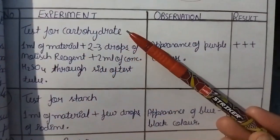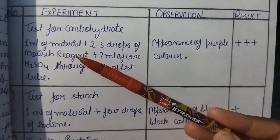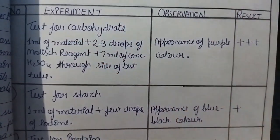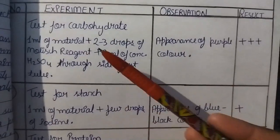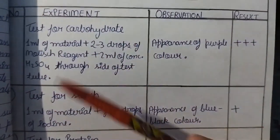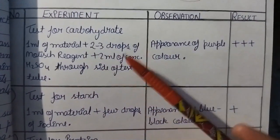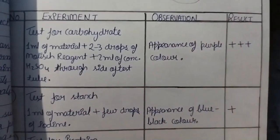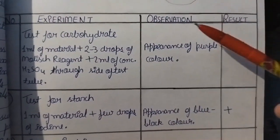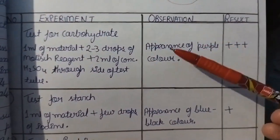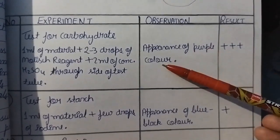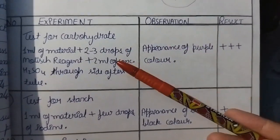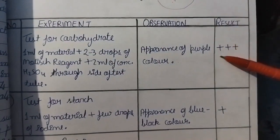For testing the carbohydrate presence, we take 1 ml of the material — which is your ground wheat flour. We add 2 to 3 drops of Molisch reagent to it, and then we add 2 ml of concentrated H2SO4 through the side of the test tube. What we will observe is the appearance of a purple color, which means that carbohydrate is present in the wheat.